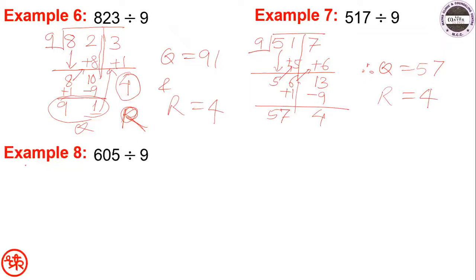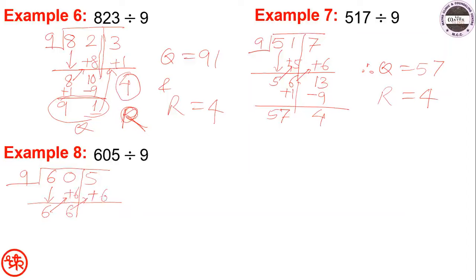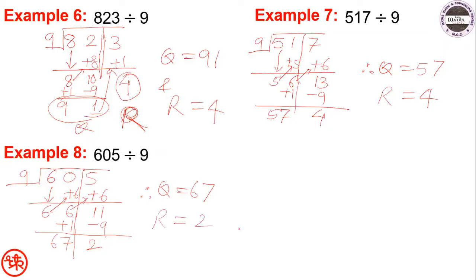Next example: 605 divided by 9. Draw vertical line then horizontal line. Write 6 below 6, add 6 to get 6 (0 plus 6 is 6), add 6 to get 11 (5 plus 6 is 11). Since 11 is greater than 9, subtract 9 and add 1: so 66 plus 1 is 67, and 11 minus 9 is 2. Therefore quotient equals 67 and remainder equals 2.